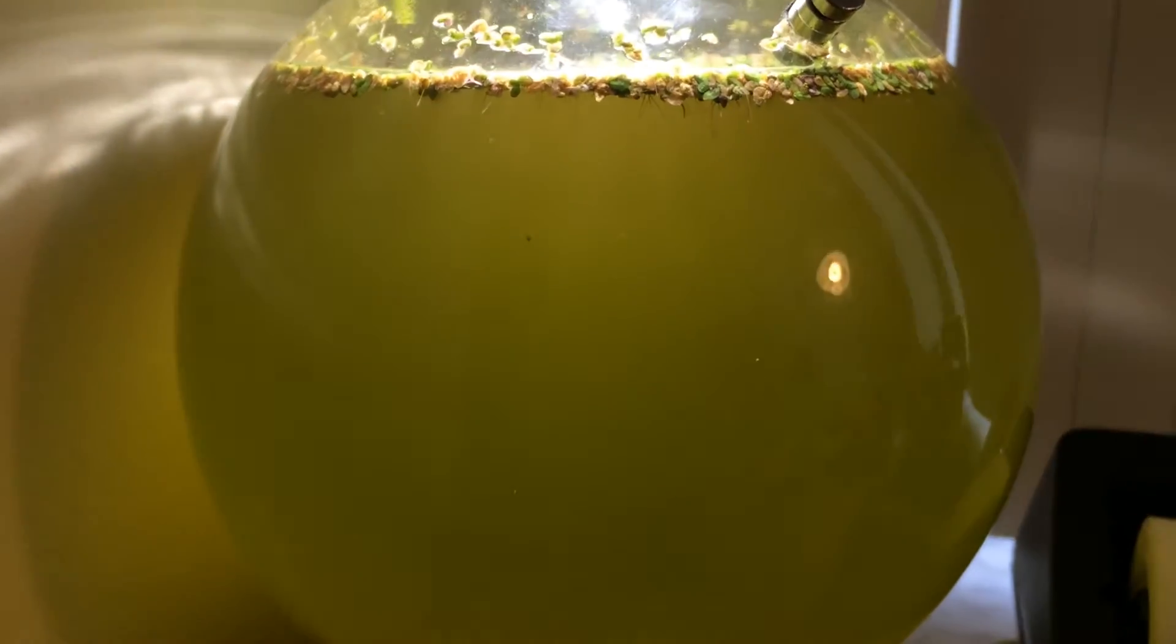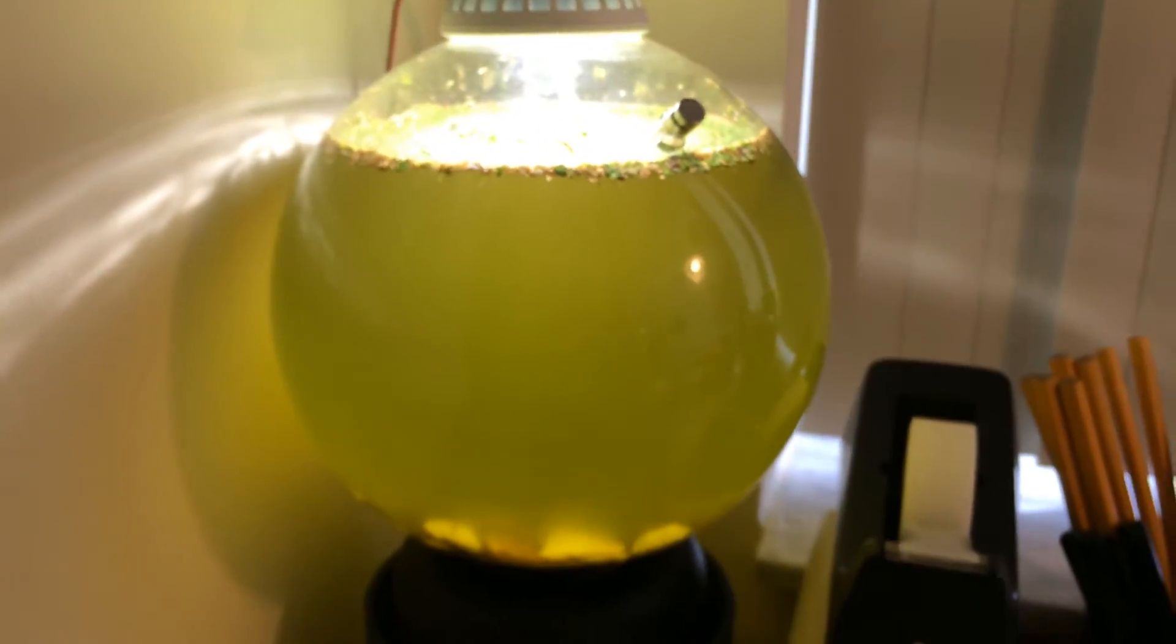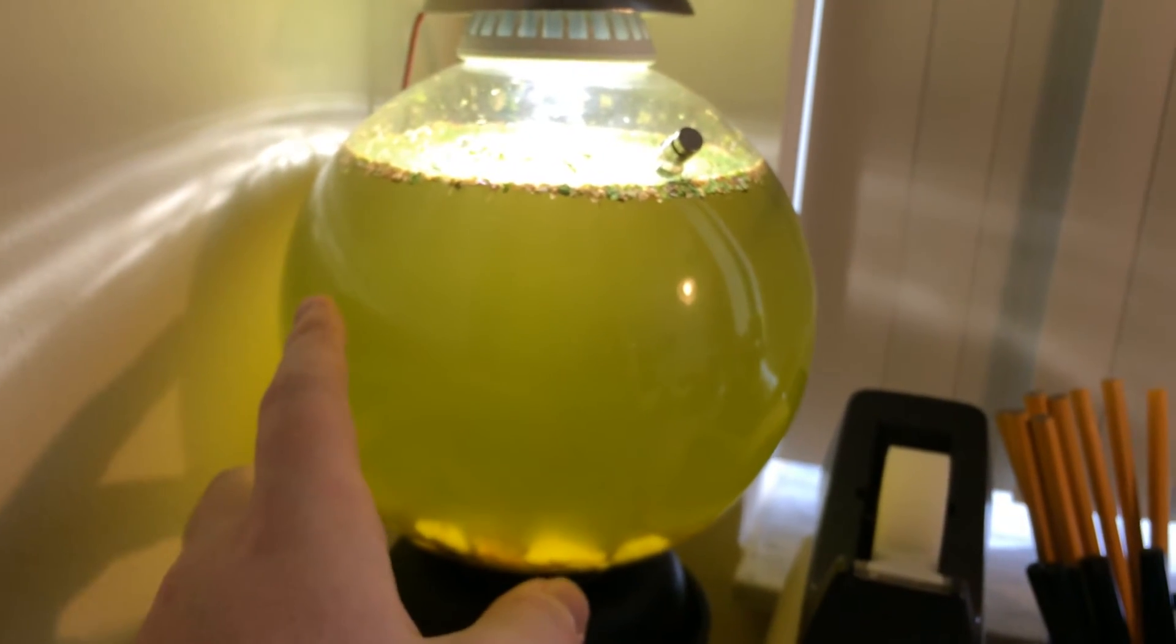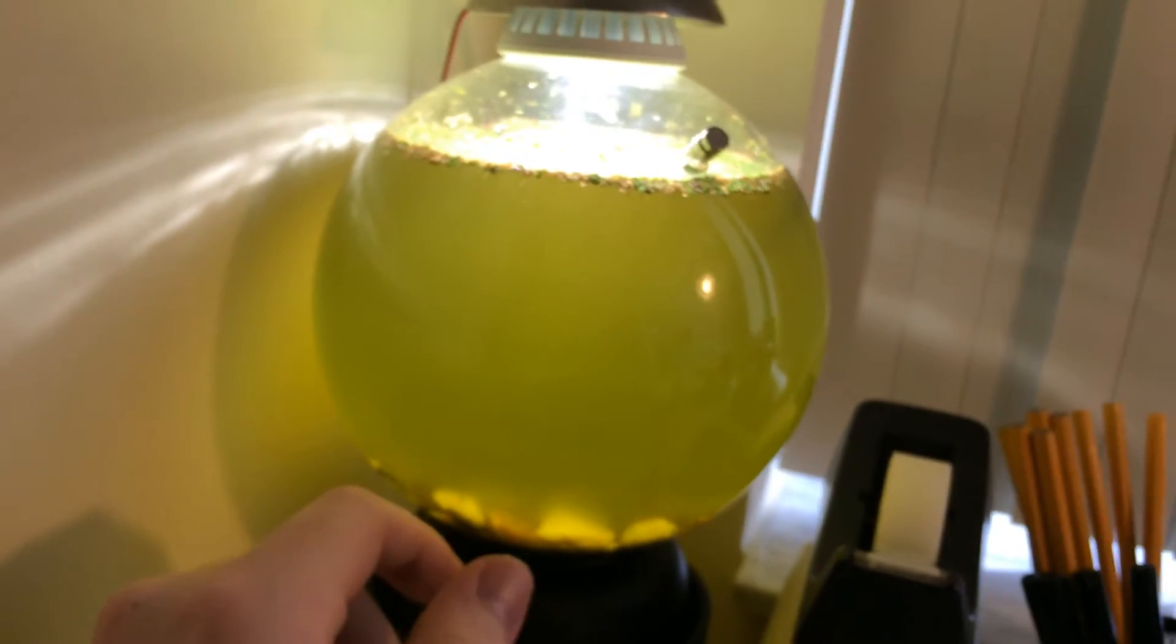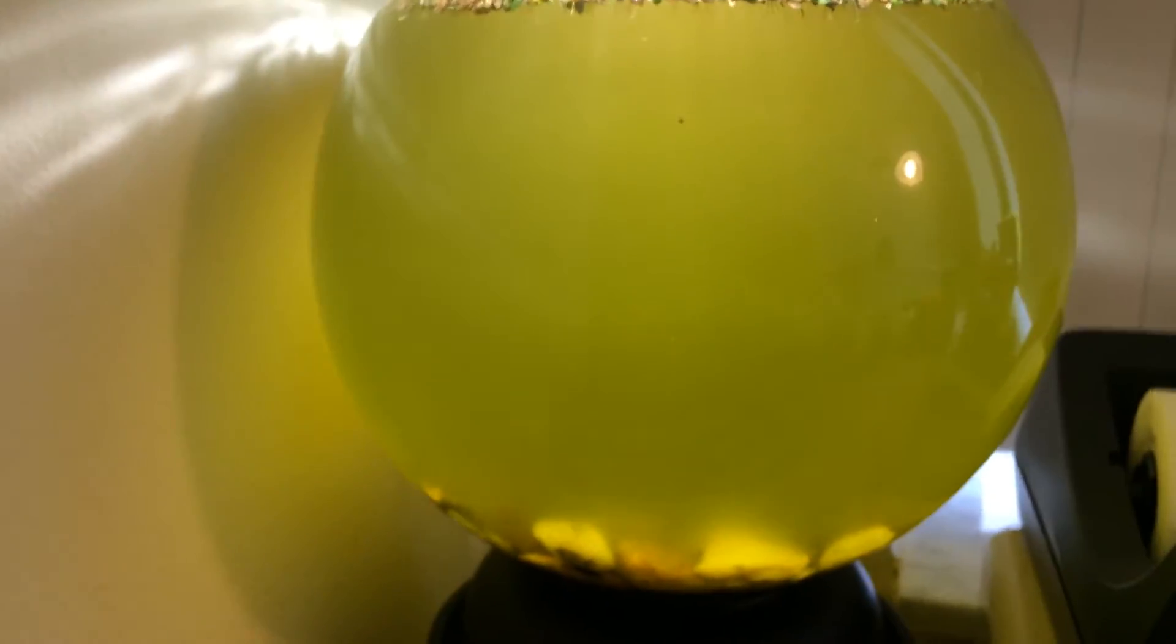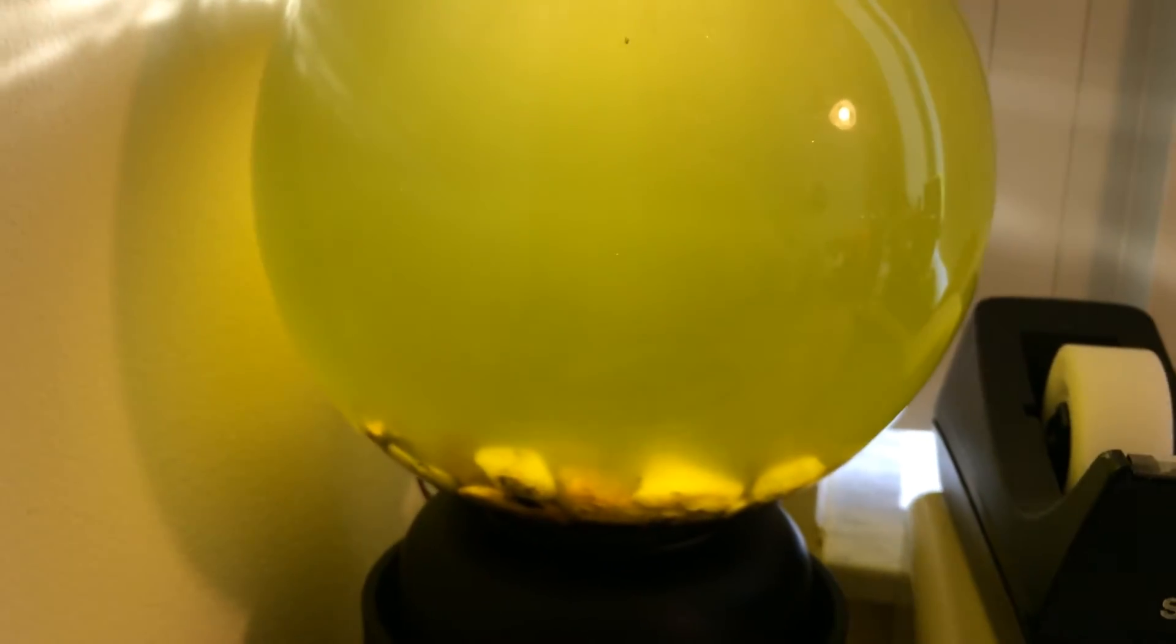So originally when the algae bloom initially happened, all the algae on the sides completely just died off. I guess because it was pushing for light or nutrients. But that'll die off. And as you can see now, how it looks kind of foggy there. That's actually algae on the side growing back.